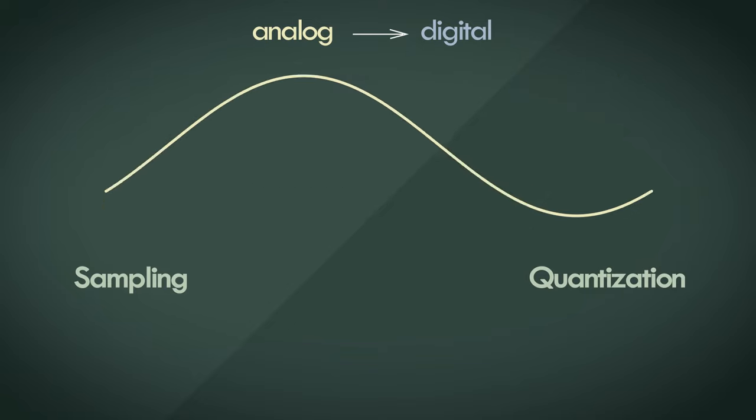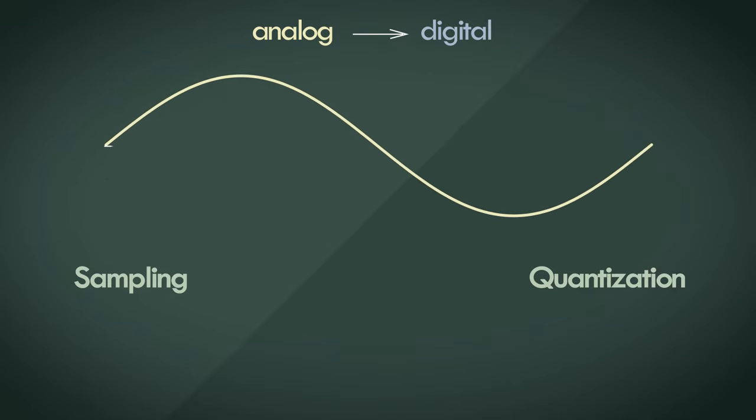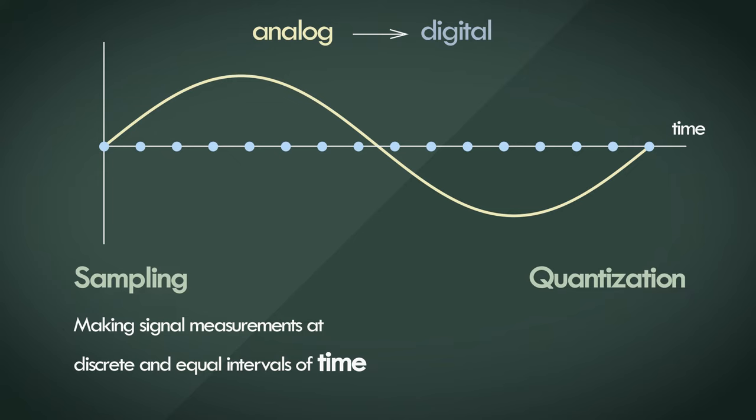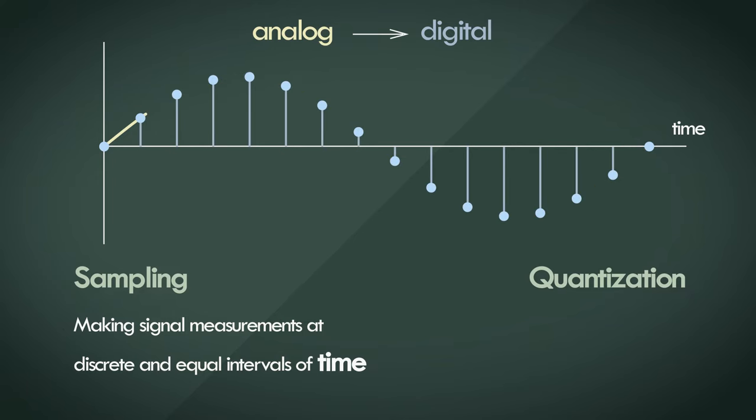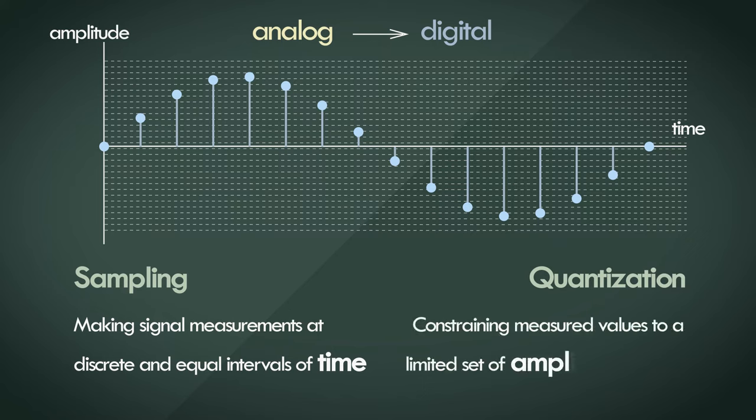Enough has been said about these two processes already, so to sum them up, sampling is simply the process of chopping the signal along the time axis at equal intervals of time. We are only interested in the signal's instantaneous amplitude at these specific intervals. Quantization on the other hand, is simply the process of placing a limit on the number of possible discrete values that the amplitude level can take on.